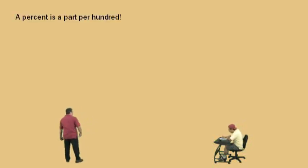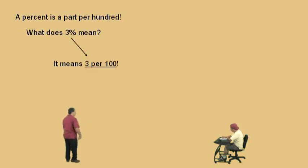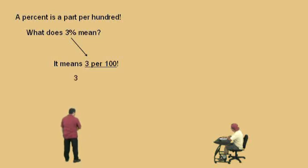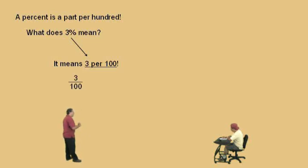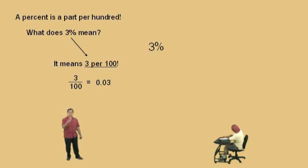Alright Charlie, now remember this: a percent is simply a part per hundred. So what does 3% mean? It means 3 per 100. So it's a ratio of 3 to 100, and we can write it as a fraction: 3 over 100. Now, 3 hundredths — how do you write that as a decimal, Charlie? 0.03. Very nice. So here's a visual representation to help you remember how to change a percent to a fraction and then to a decimal — watch.